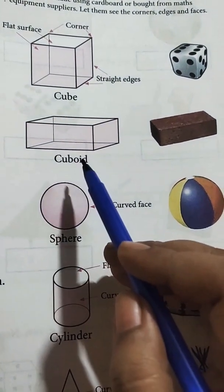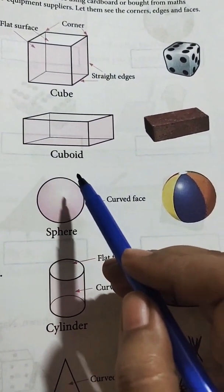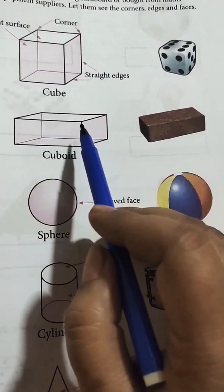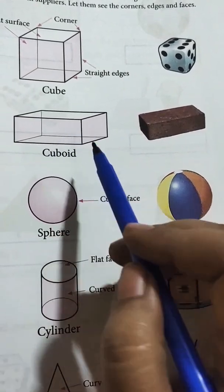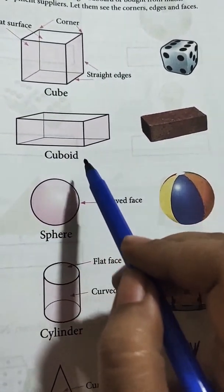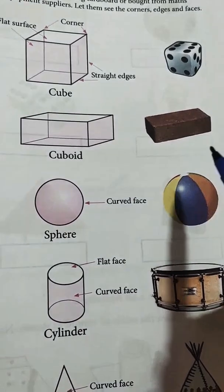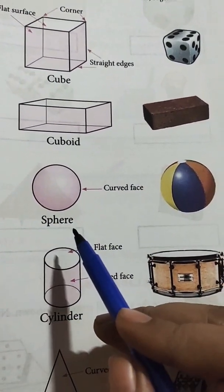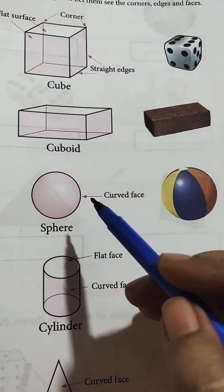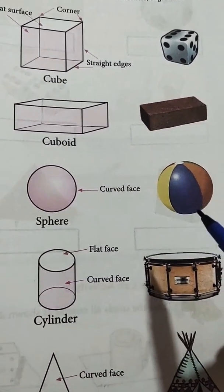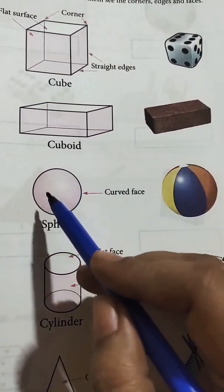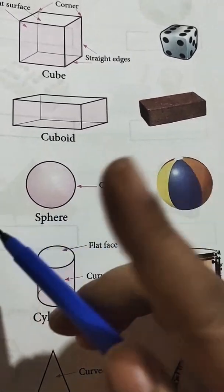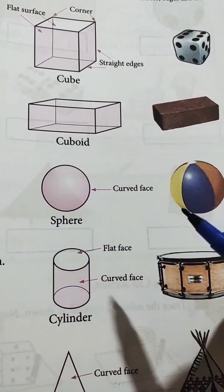Now come to the next. This is cuboid. It looks like a brick. It also has flat surfaces, straight edges and corners. Now come to the next — this is sphere. This solid shape is like a ball. It has only one curved face, and it has no edges and no corners.